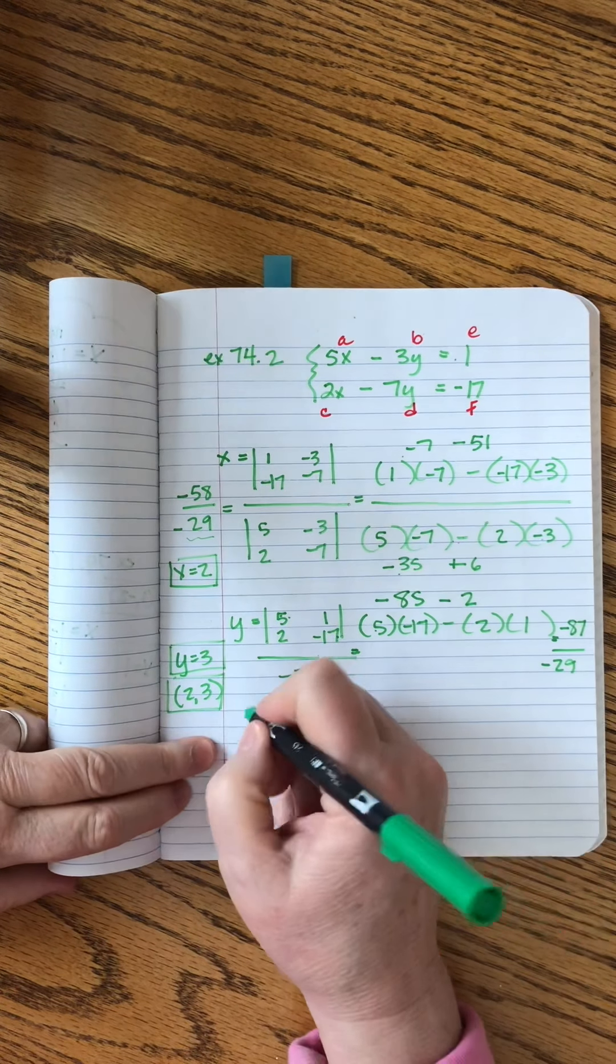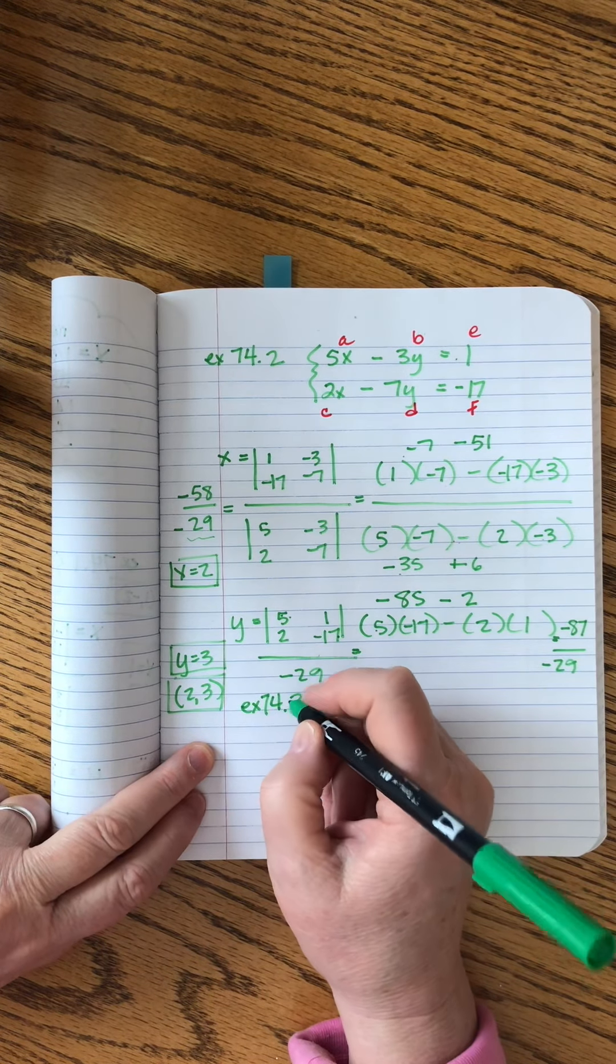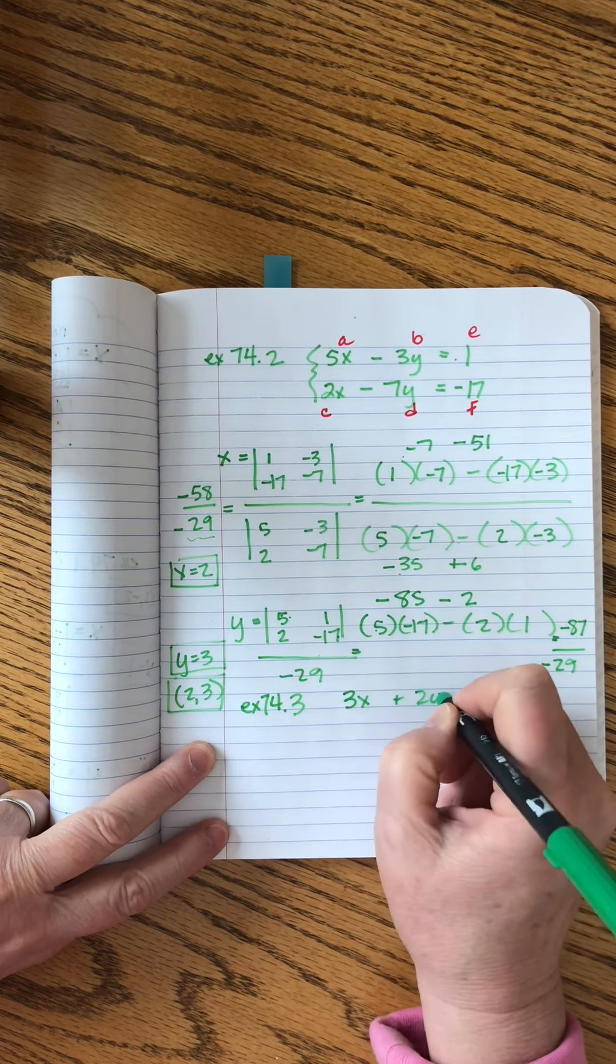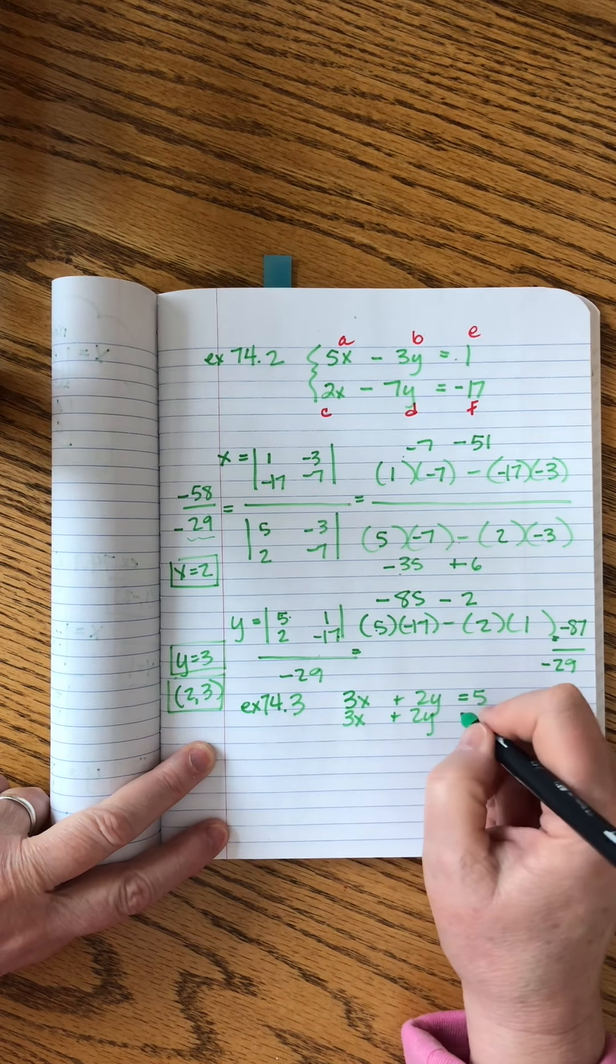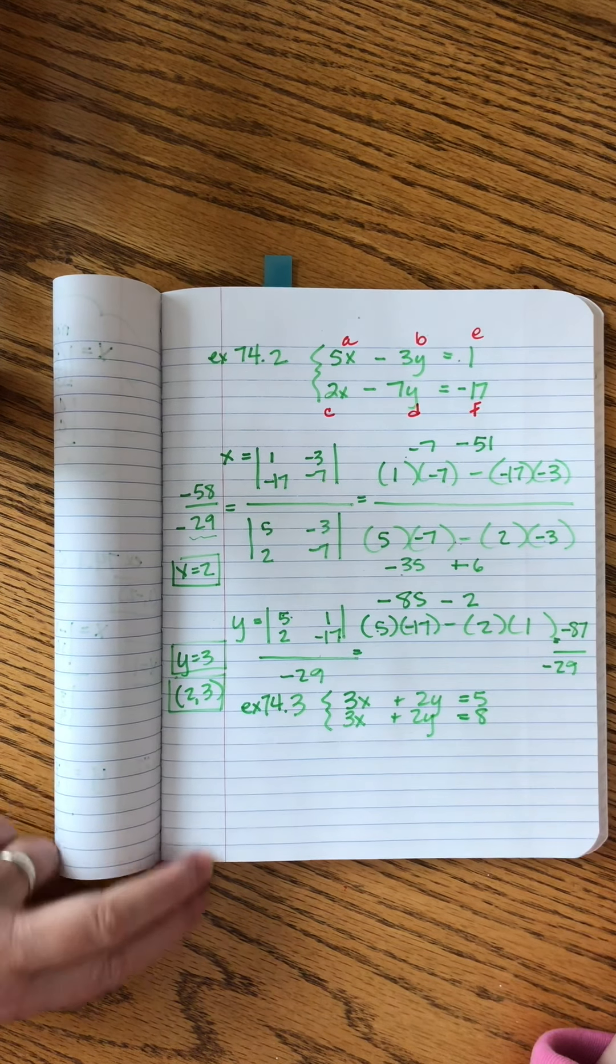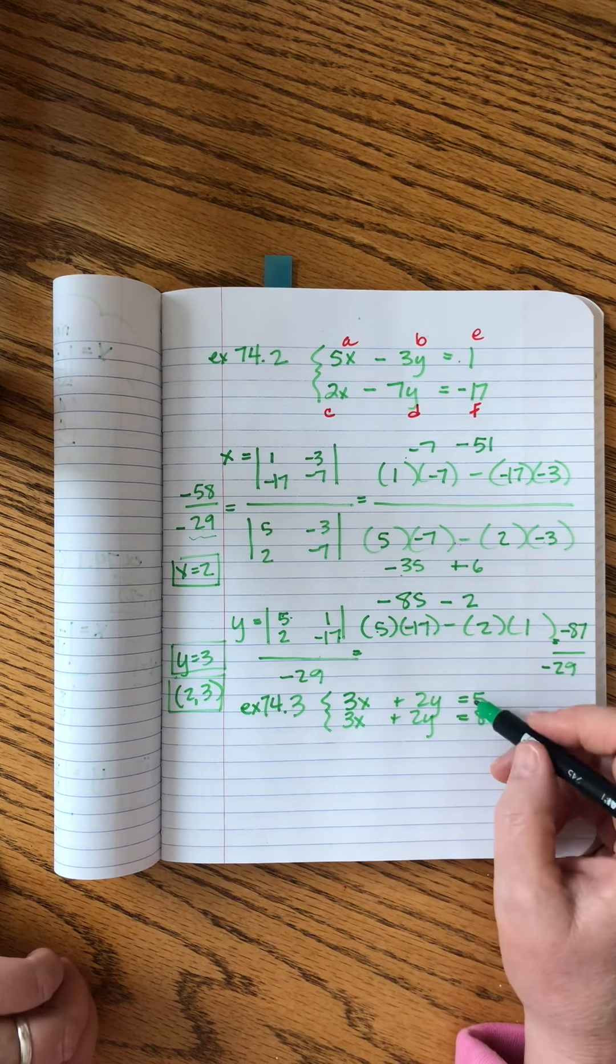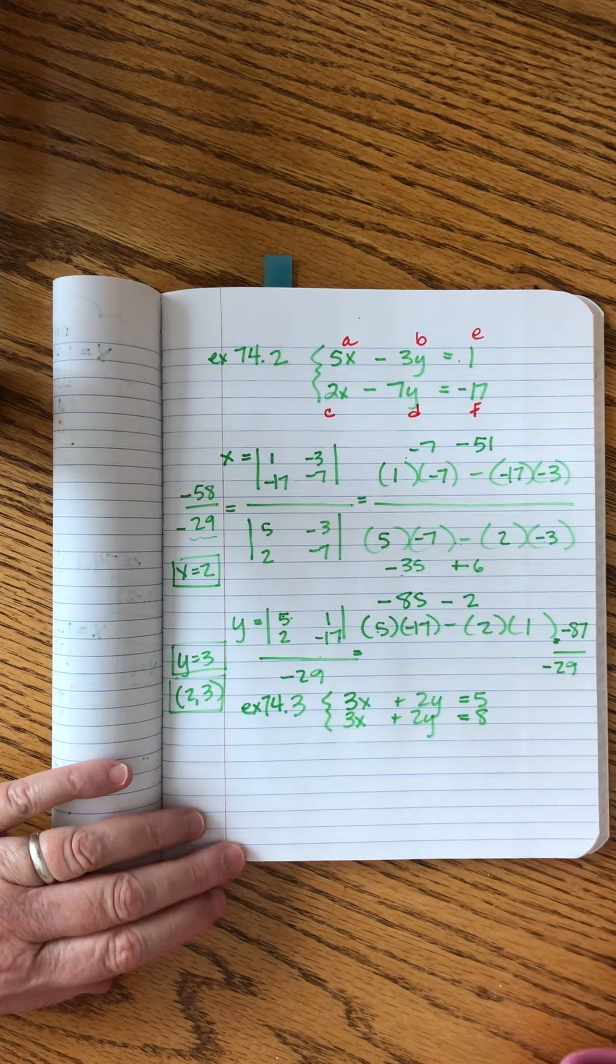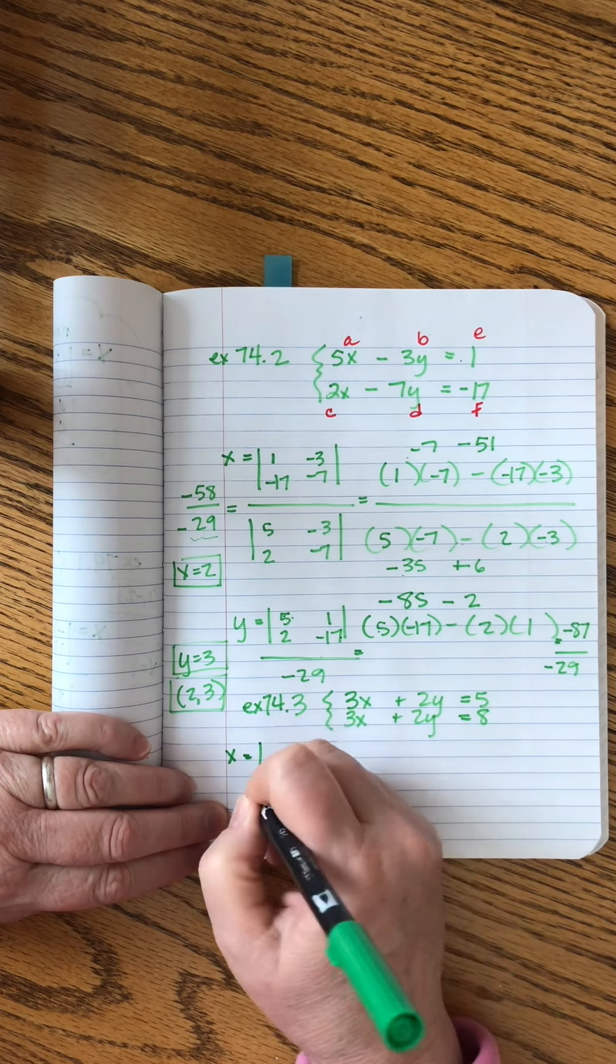One more example in this lesson that is not a trick, but a special situation. 74.3. Again, use Kramer's rule to solve. We have 3x plus 2y equals 5, 3x plus 2y equals 8. As we write it down, we start to scratch our heads. Because look, 3x plus 2y equals 5, but then the very same thing equals 8. That seems a little crazy. How can there be a value of x and y that would make this equal 5 but then the very same thing equal 8? That makes me suspicious. But let's just go ahead and do our solving and see what happens. Because there's going to be a fun surprise.